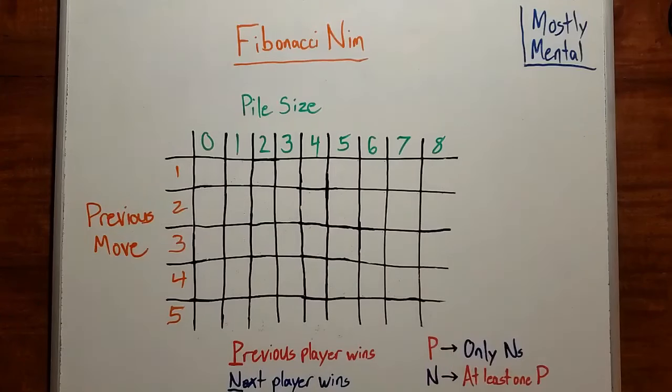Okay, those are the positions. Now we want to classify them by which player wins. Notice that if there are no ducks left, that is, if the pile size is 0, then the player who just moved wins. In game theory terms, these are P positions, since the previous player won.